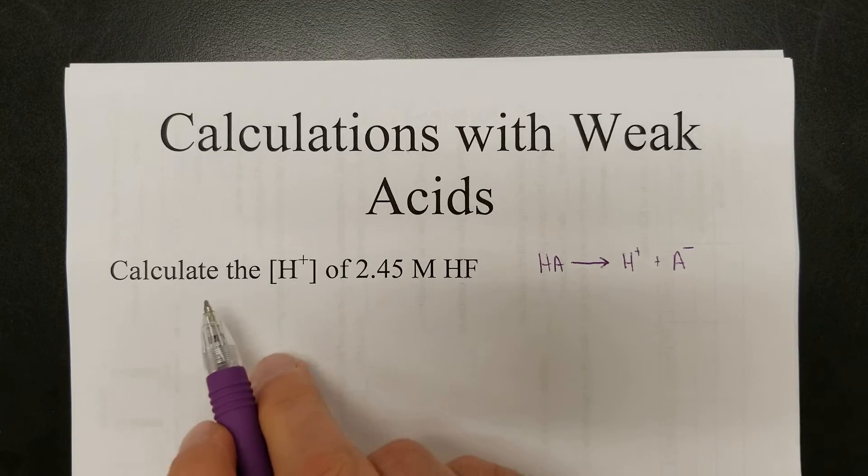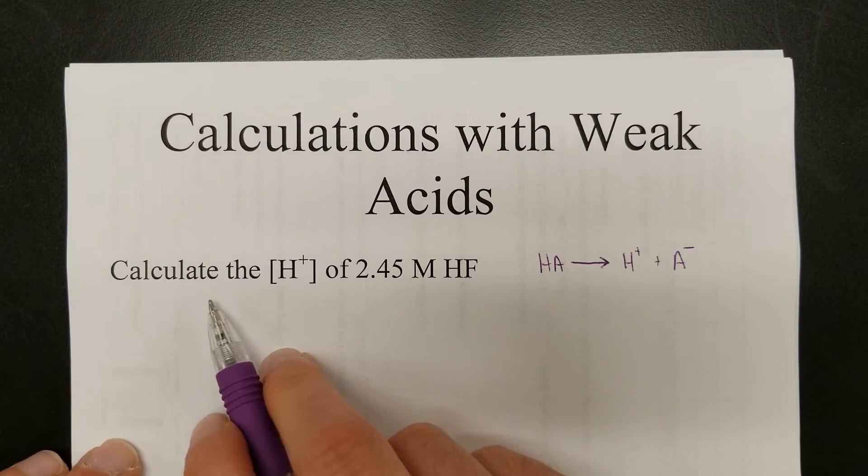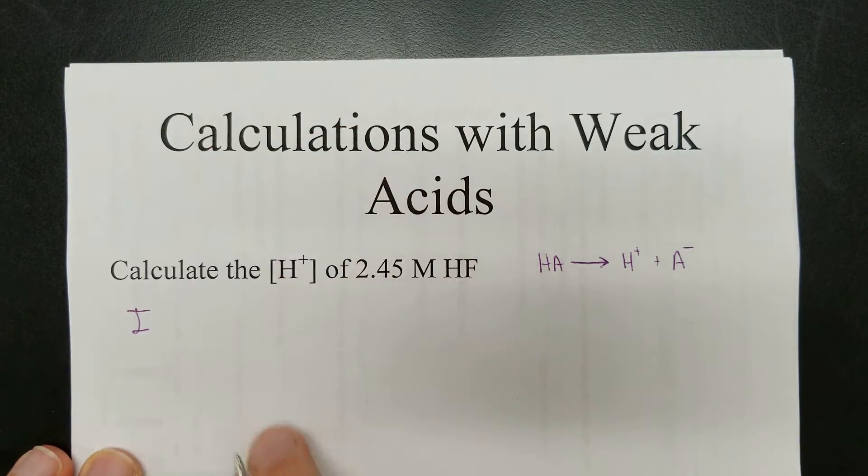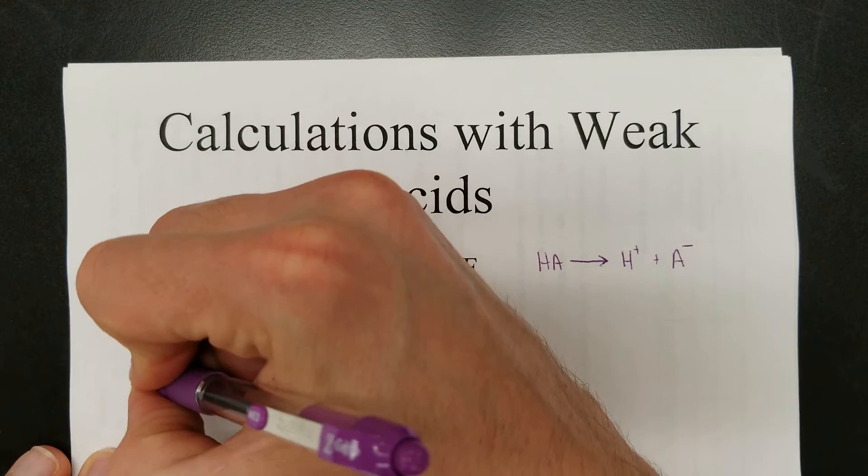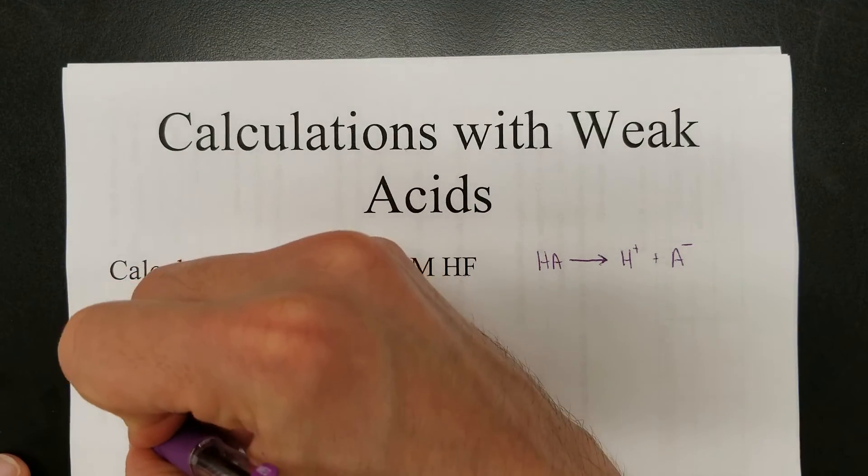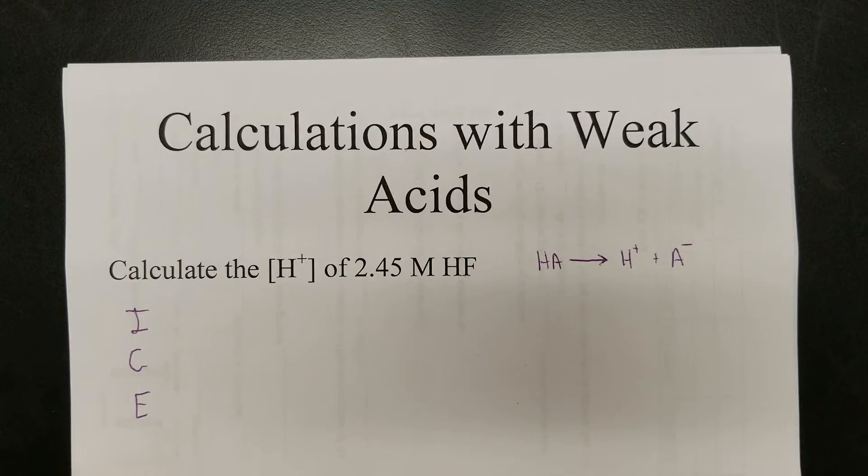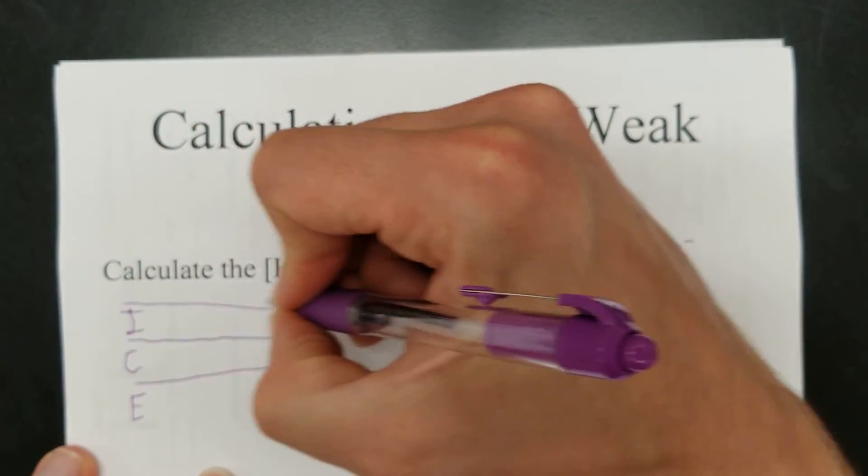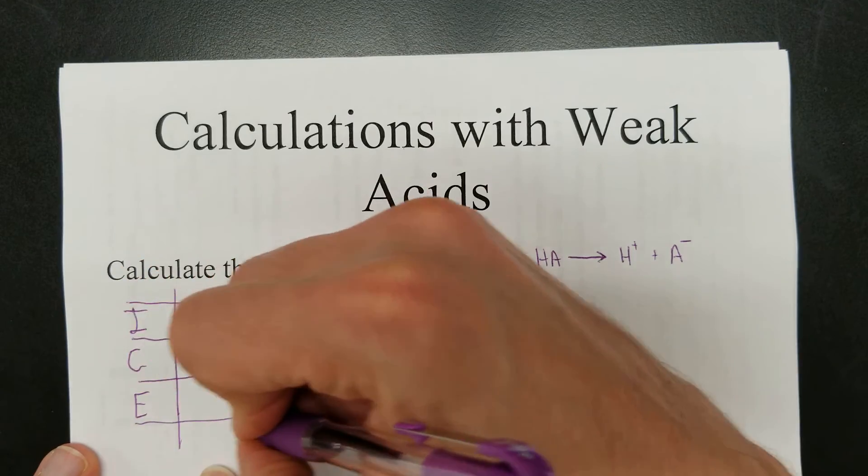All the acids will do the same. So let's create what's called an ICE table, which is initial concentration, changing concentration, and then equilibrium, final concentration, for all things involved. And my lines are less than 100% straight, but I suppose one gets the idea.